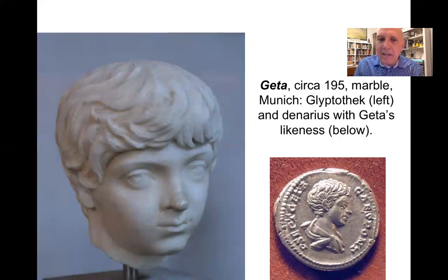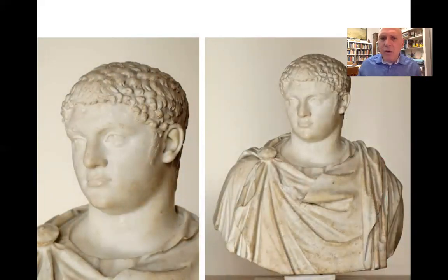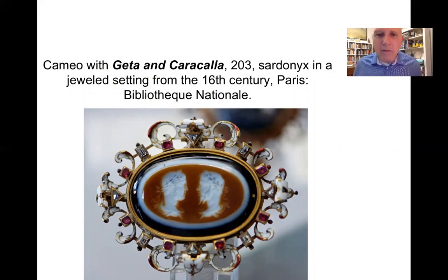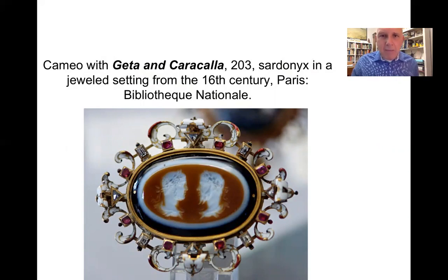Here are some images of Geta as a young boy from around 195 — the infant Geta on the left and a coin on the right. An image of him as a late teenager dates to about the time he assumed the throne at Septimius's death. There is also a wonderful cameo in Paris at the Bibliothèque Nationale — a dual portrait of Geta and Caracalla facing each other — which I find very curious since they ultimately became rivals, with Caracalla becoming the victor. The Sardonyx cameo dates from around 203, though the Baroque setting is from the 16th or 17th century.